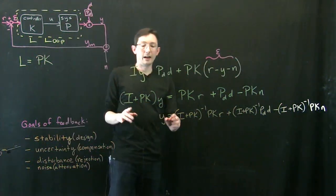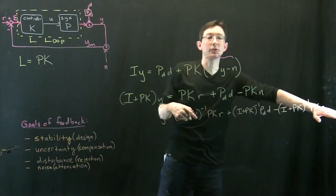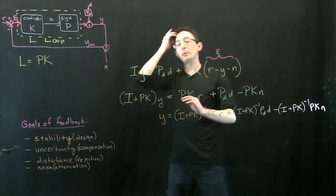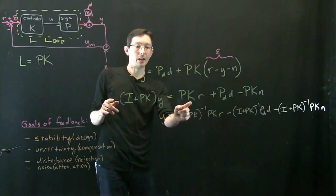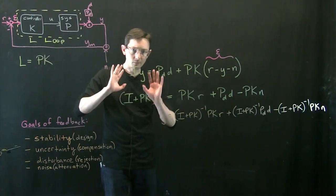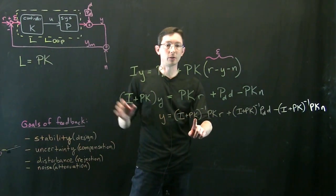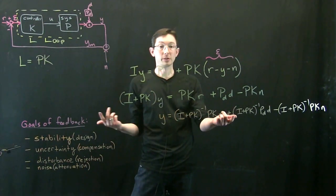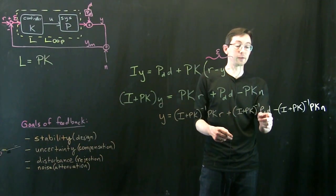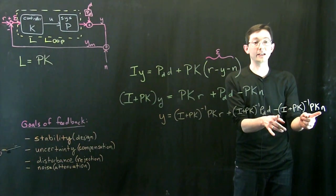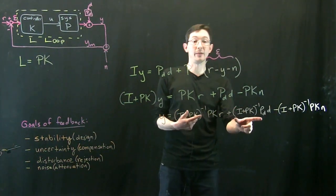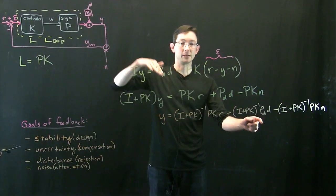Now I have the output of my system Y as this big expression: a transfer function times reference, plus a transfer function times disturbance, plus a transfer function times noise. I want to design K so that all of these transfer functions have desirable properties. The idea is we're going to try to design the controller so that we have good reference tracking so that Y equals R, that disturbances are rejected — a small transfer function at least for frequencies where we expect disturbances — and that this noise transfer function is really small at high frequencies where noise is important.